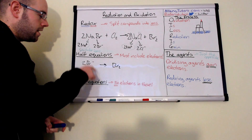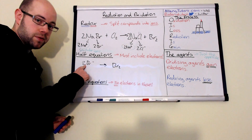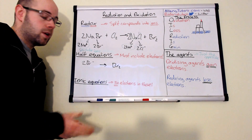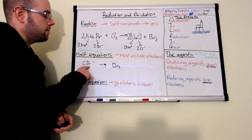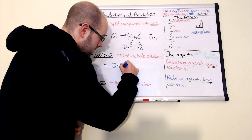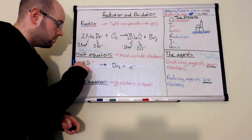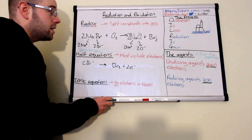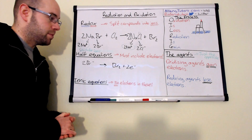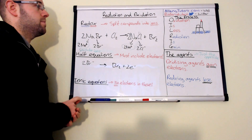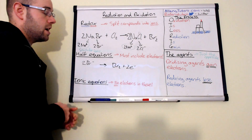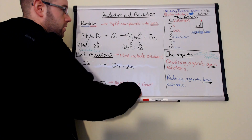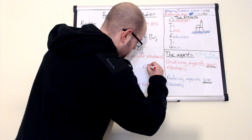We have a 2 negative charge on the left (two Br- ions) and Br2 on the right which is neutral. Since oxidation and reduction is all to do with electrons, we add electrons to balance the charges. We need 2 electrons on the right-hand side to balance the 2 negative charge on the left. Now, Br- is undergoing a loss of electrons going to Br2, so this whole process is oxidation.